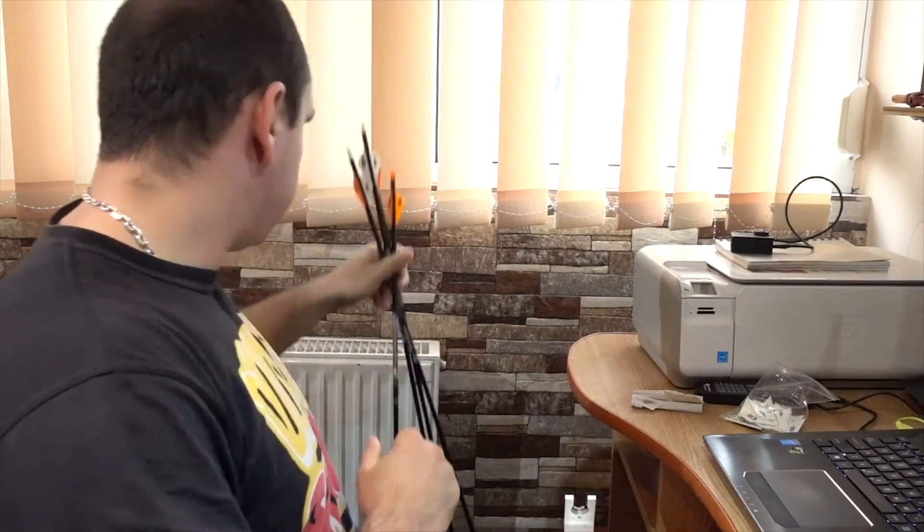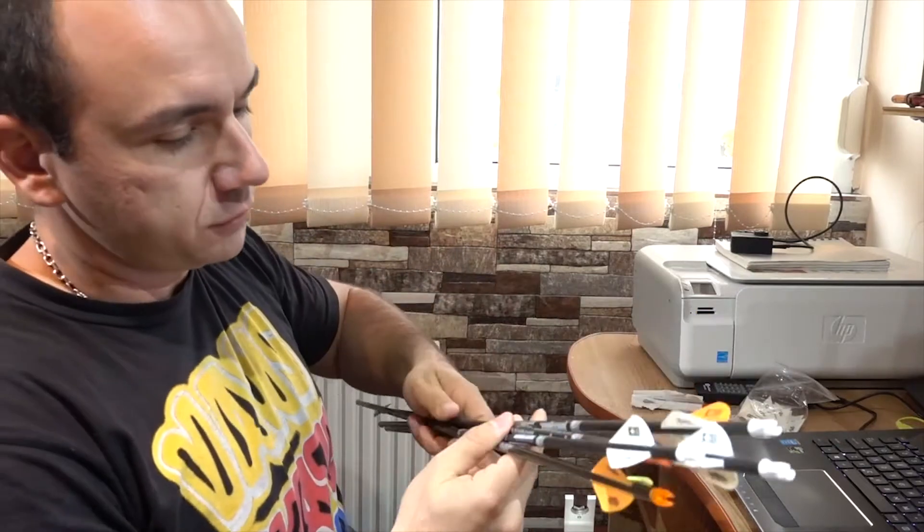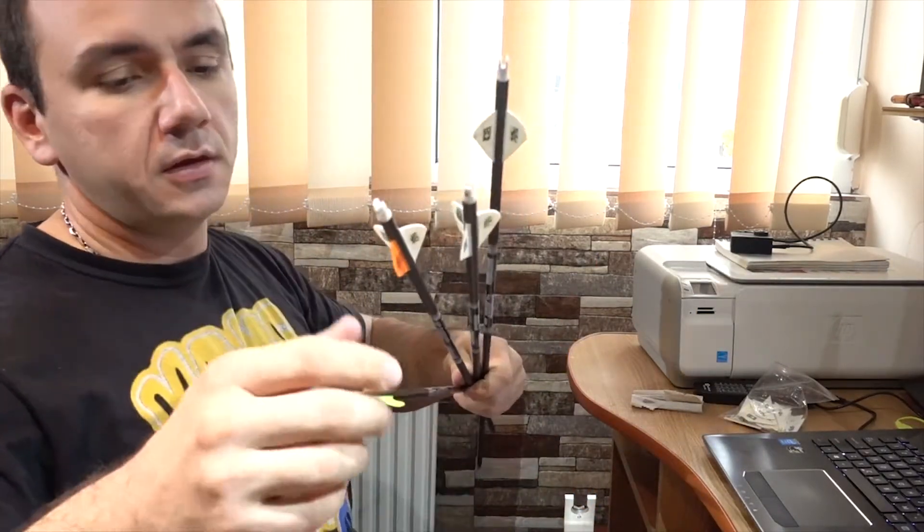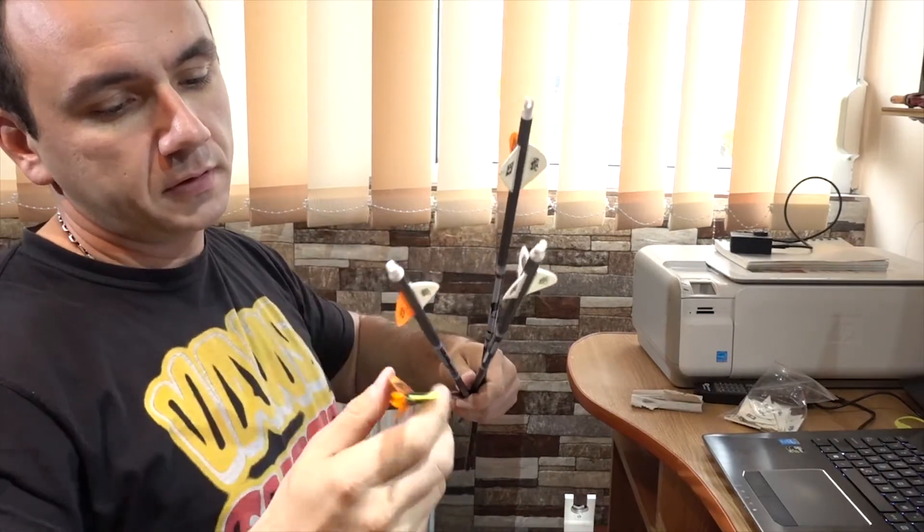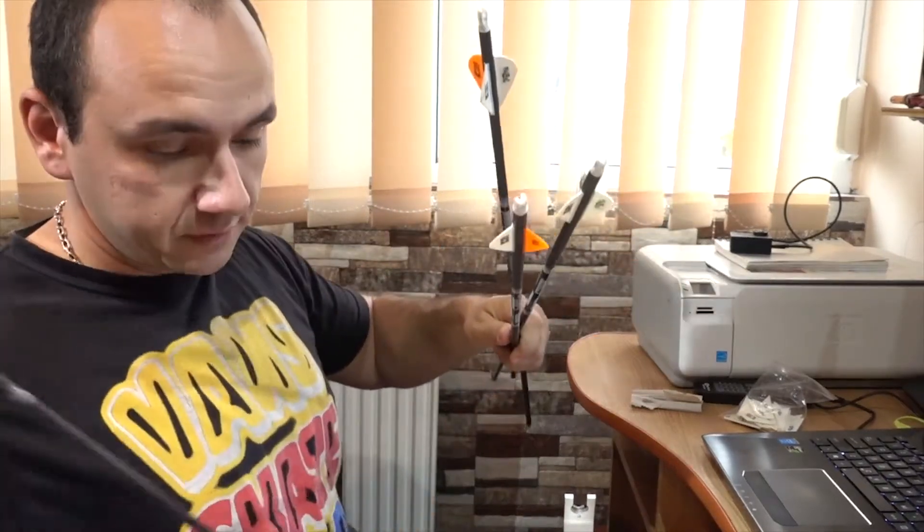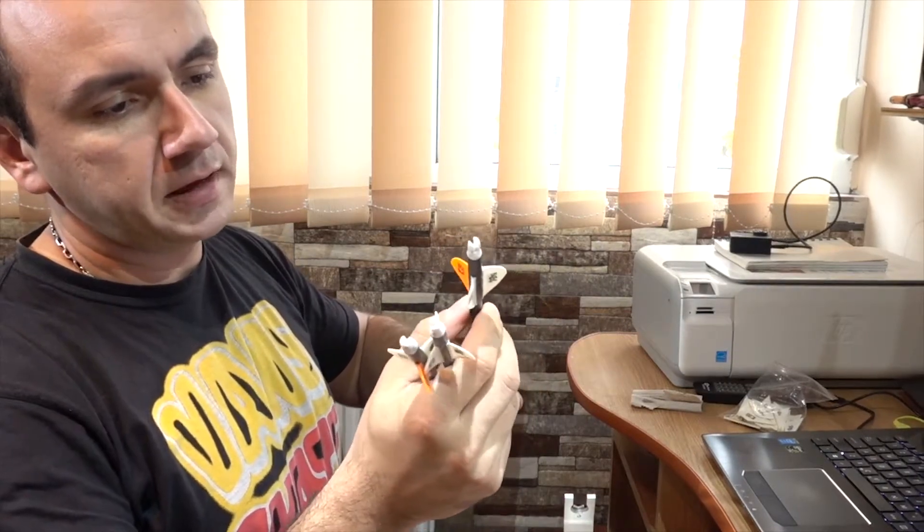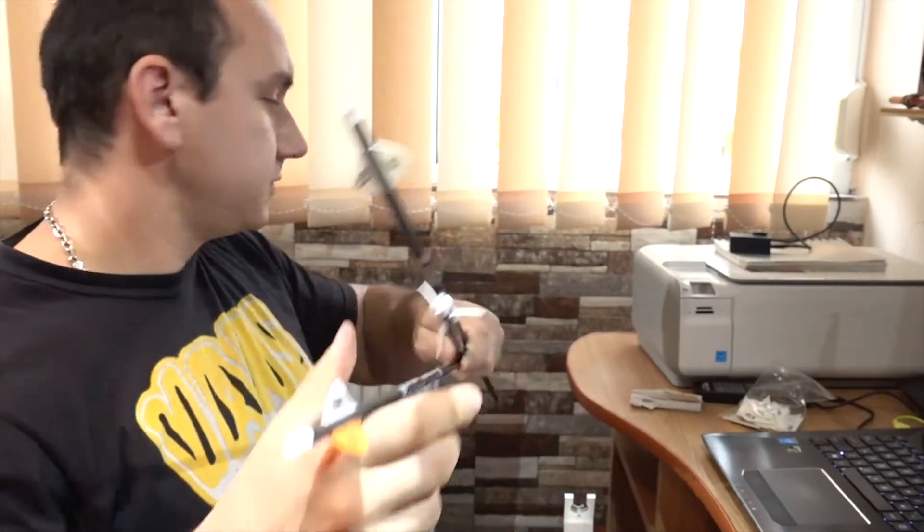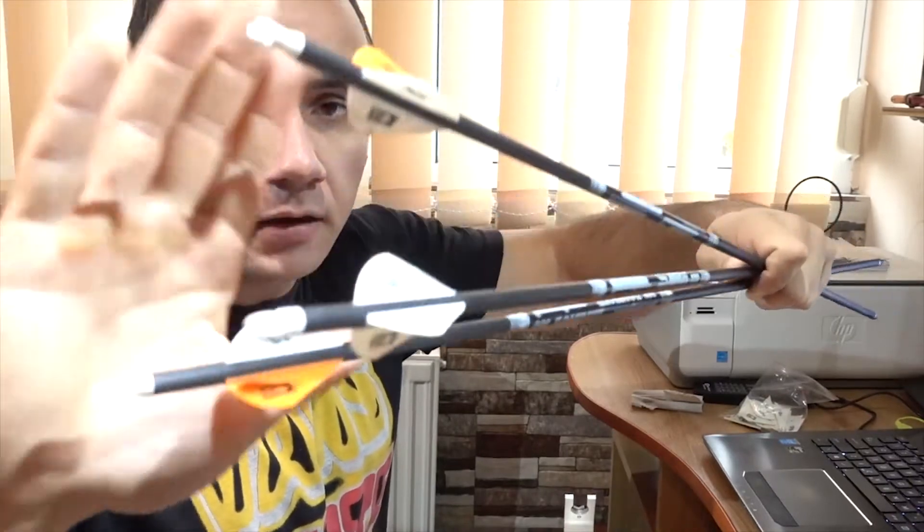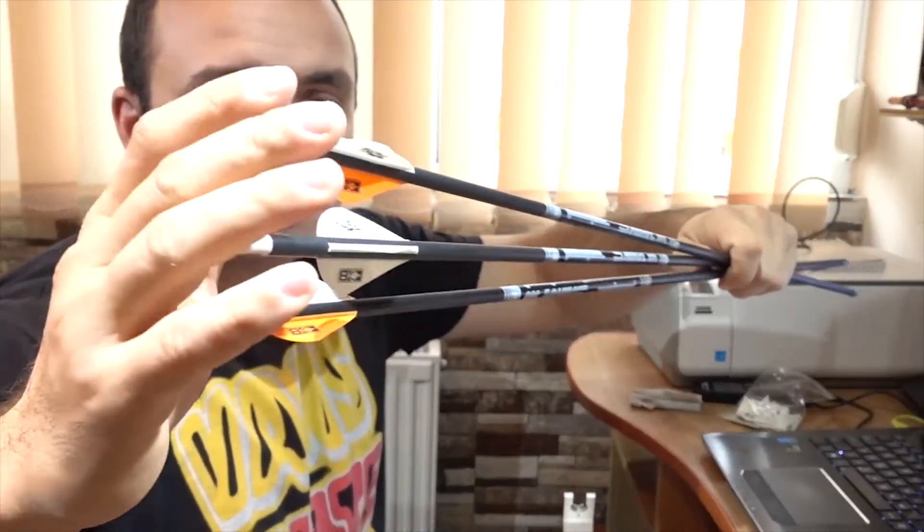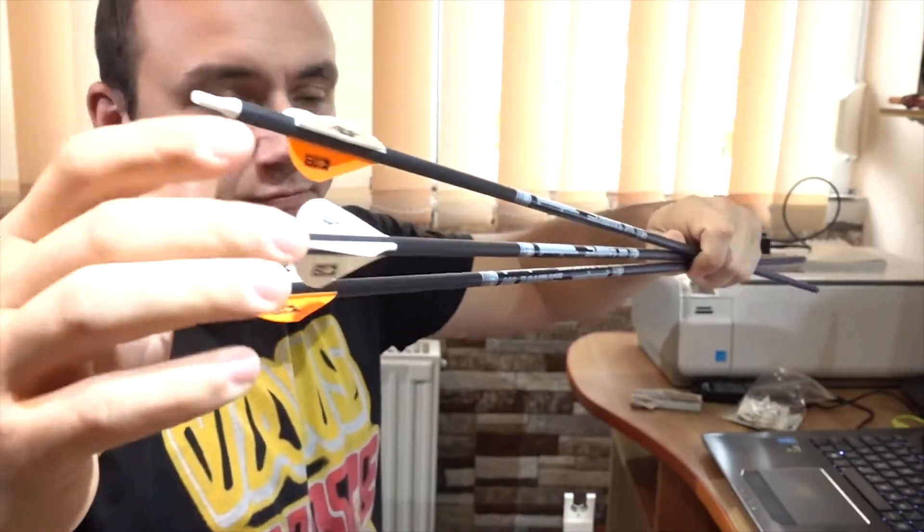So what I've got here are four of my arrows which I've repaired. Three of them had damaged vanes, and every single arrow only had one vane that came off.